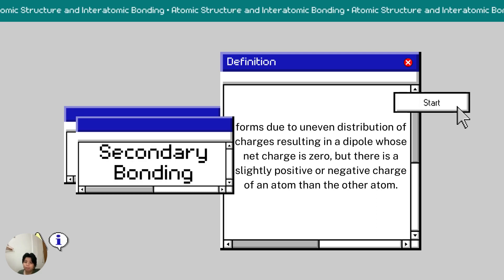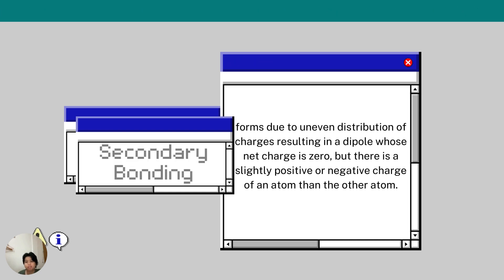For the secondary bonding, the formation of a dipole with a net charge of zero but a slightly positive or negative charge on one atom relative to the other atom, it results from the unequal distribution of charges.